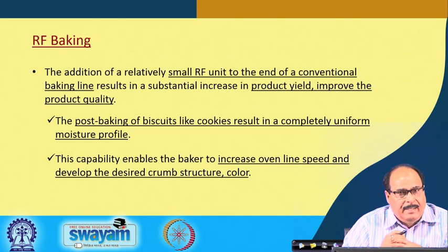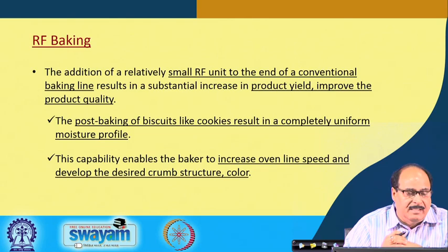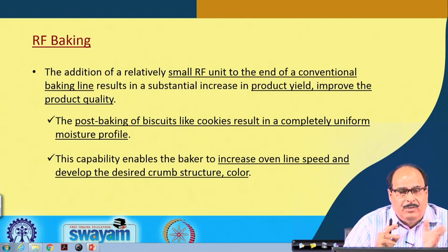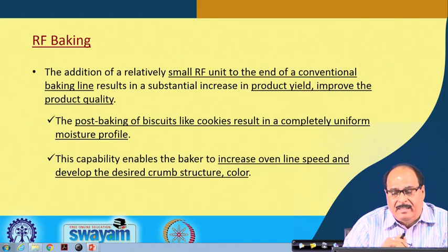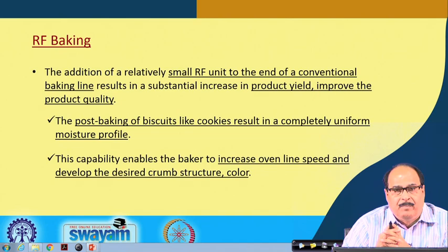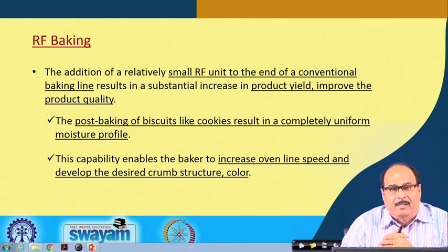Radio frequency energy can be used for baking purposes and has good application in the baking industry. The addition of a relatively small RF unit to the end of a conventional baking line results in substantial increase in product yield and improved product quality. The post-baking treatment of biscuits like cookies results in a completely uniform moisture profile in the product, enabling the baker to increase oven line speed and develop the desired crumb structure, color, and texture.